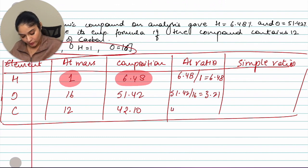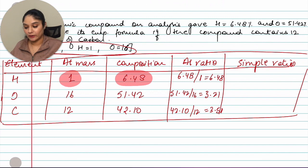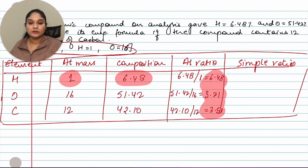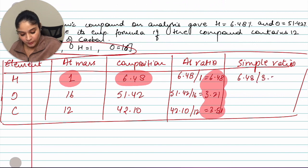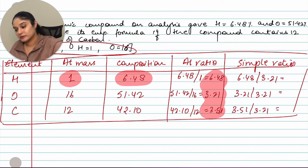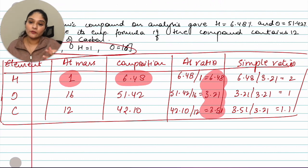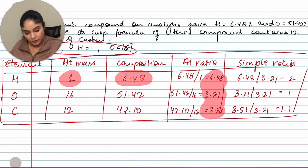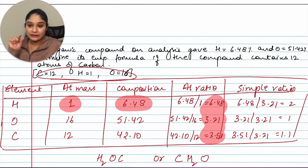For the simple ratio, divide all atomic ratios by the smallest value, which is 3.21: H = 6.48 ÷ 3.21 ≈ 2; O = 3.21 ÷ 3.21 = 1; C = 3.51 ÷ 3.21 ≈ 1.1, which we round to 1. So the empirical formula is CH₂O.